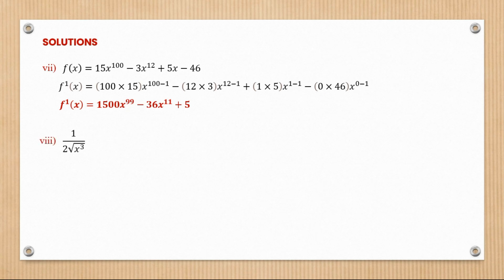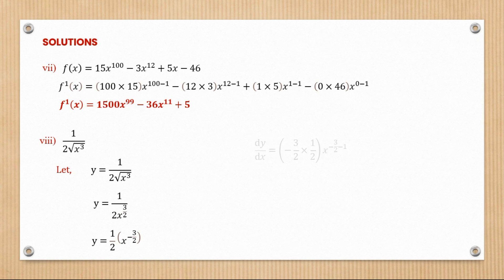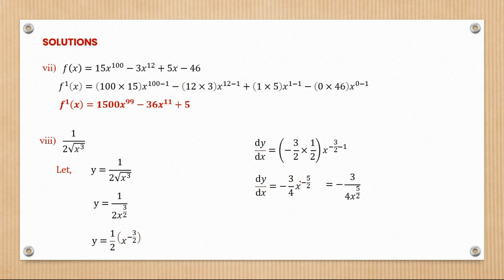Question eight is a unique example where x is in the denominator. We bring x to the top, giving x to the power negative three over two, with the 2 remaining in the denominator. Differentiating gives negative three over two times one half, which is negative three over four, and the index becomes negative three over two minus one equals negative five over two. Taking x back to the denominator, dy/dx equals negative three over 4 root x to the power five.